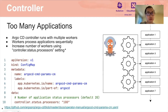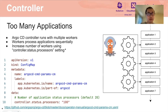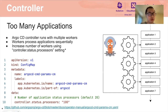Argo CD's controller runs with multiple workers that form a pipeline reconciling applications one by one in sequence. The default number of processes is 20, which is typically enough to handle hundreds of applications. However, if you have a thousand or more applications, you might start seeing delays of a few hundred milliseconds that increase as you onboard more applications. One strategy to improve performance is to increase the number of workers in the controller by modifying `controller.status.processes` inside your Argo CD config map. Note that a larger number of workers requires more memory and CPU resources, so update your controller resource requests and limits accordingly.